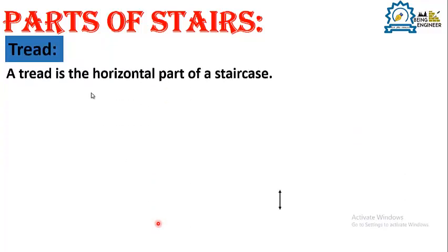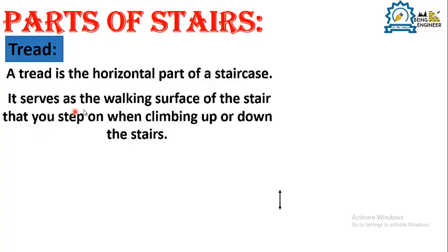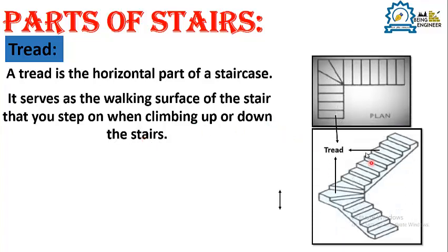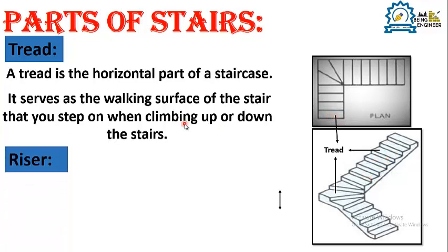The next component is tread. What is a tread? A tread is the horizontal part of the staircase. It serves as the walking surface of the stair that you step on when climbing up or down the stairs. As you can see here, this is the flat surface of the staircase on which one walks for climbing up or down. In the plan section, the plan only shows the tread part of the staircase.